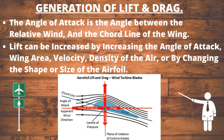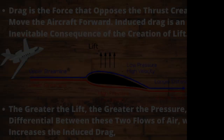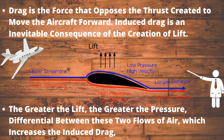Generation of lift and drag. Lift is the force that pushes the aircraft upwards. The angle of attack is the angle between the relative wind and the chord line of the wing. Lift can be increased by increasing the angle of attack, wing area, velocity, density of the air, or by changing the shape or size of the airfoil. When lift equals gravity, the aircraft maintains level flight. Induced drag is an inevitable consequence of lift — the greater the lift, the greater the induced drag, and since lift increases with angle of attack, so too does induced drag.